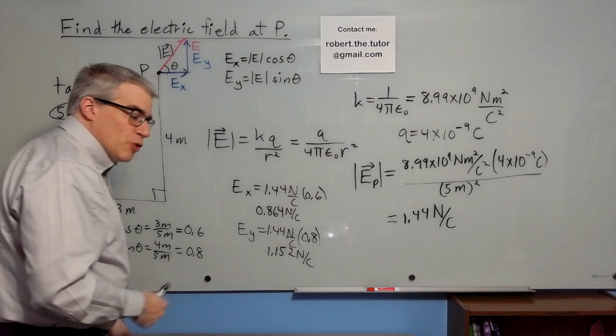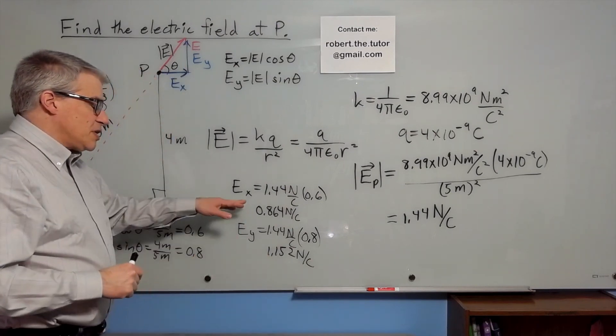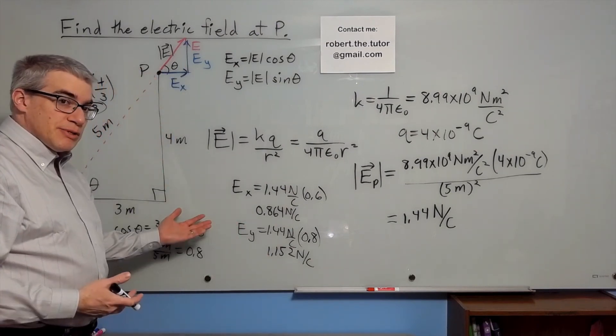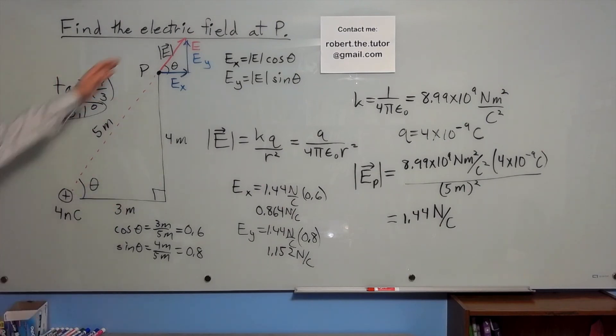So I made a mistake for a moment, but I caught it immediately because a component cannot be bigger than the hypotenuse. So that is how you find the electric field at a point when you need to find the vector components or magnitude and direction.